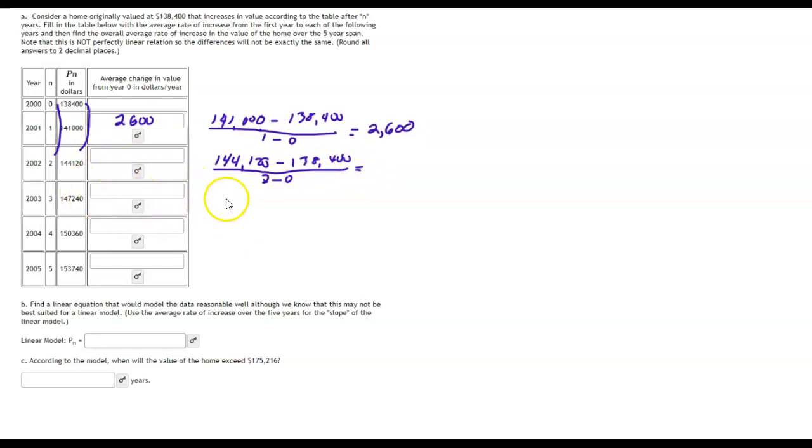Then the next calculation is going to go to $147,240 minus the $138,400 because we're doing an average rate of increase. That's a comma, not a 1. Over 3 basically. And we'll just continue that to the end. So I'll go ahead and pause the video and finish that.